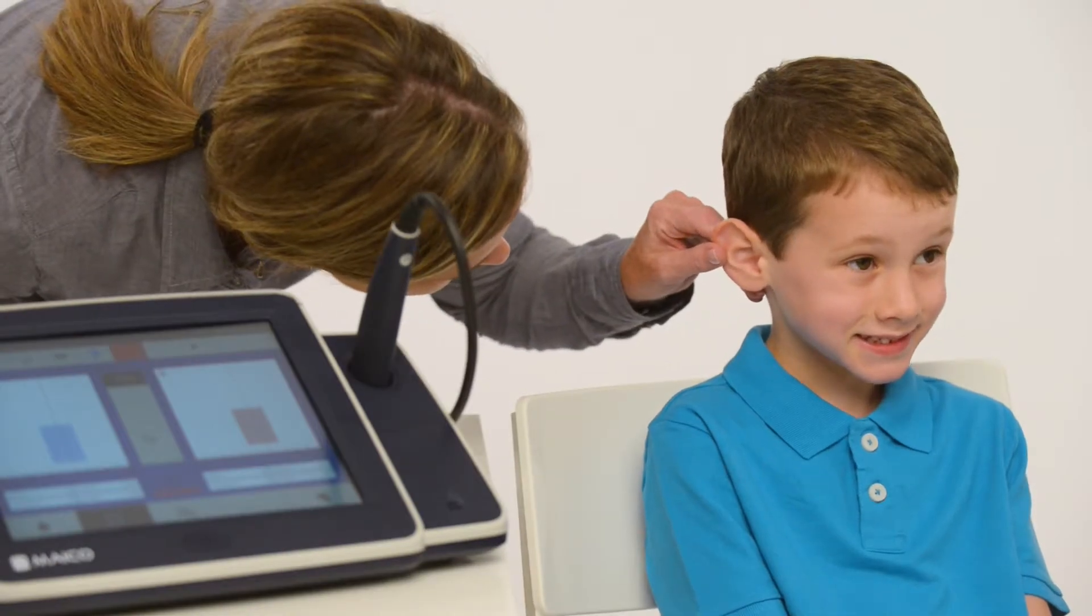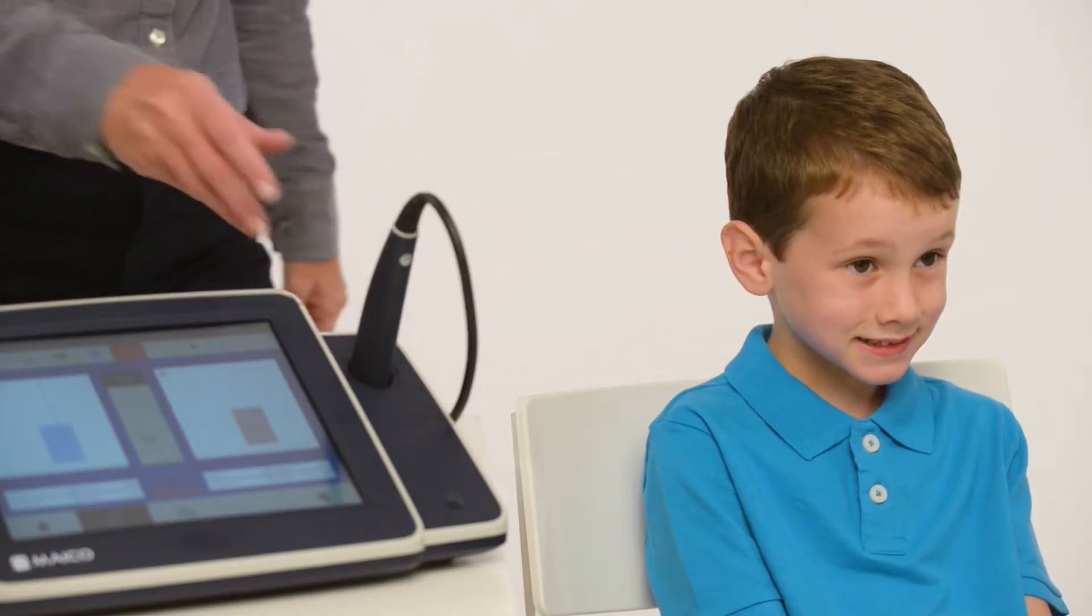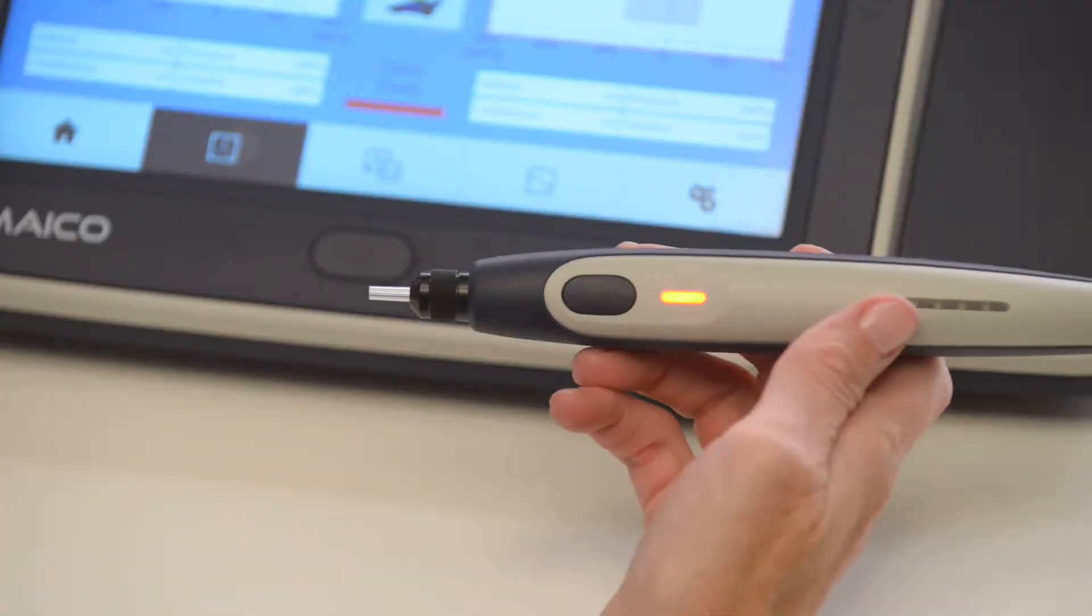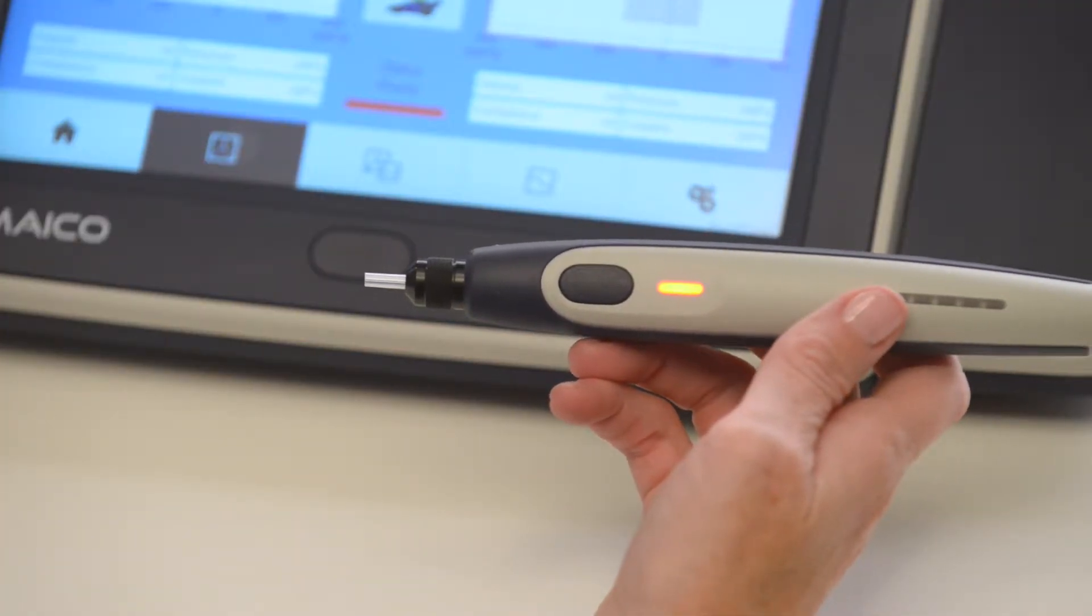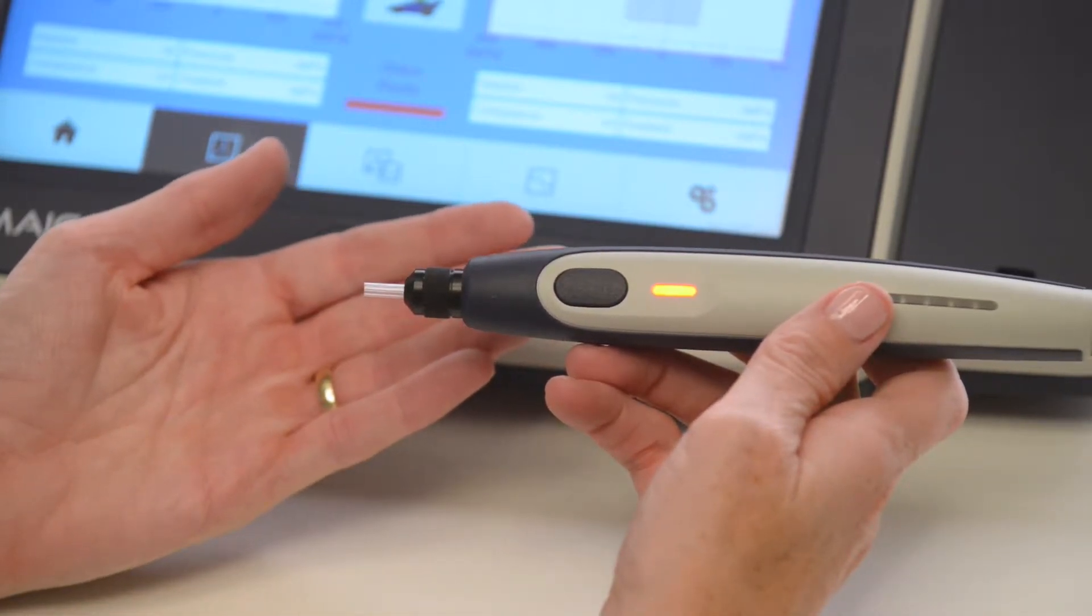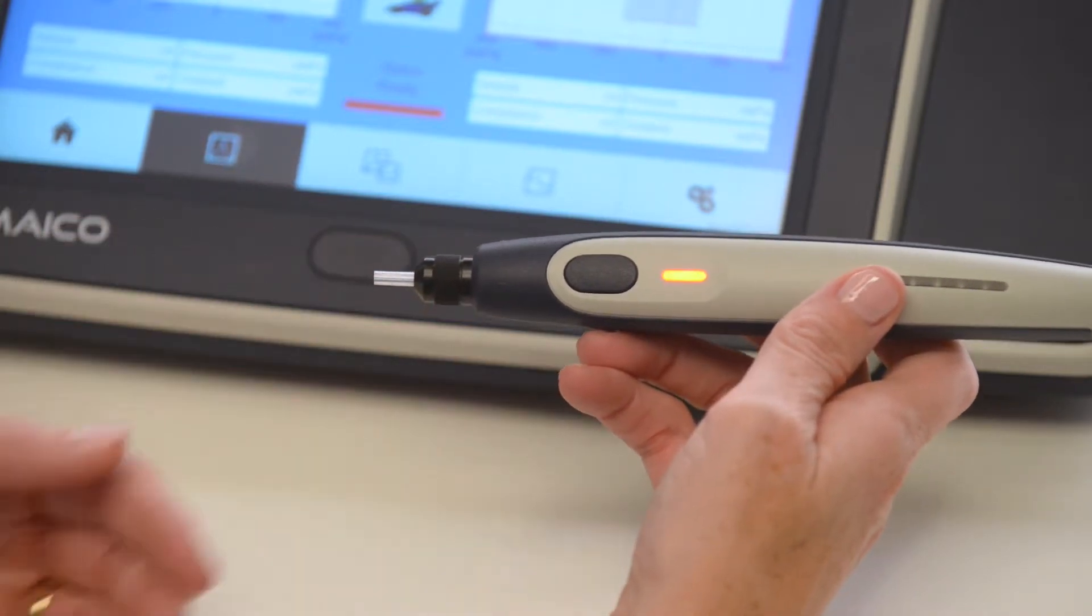When starting a tympanometry test, make a visual inspection of the ear canal to ensure there is no earwax. It is also critical to inspect the probe tip between patients to ensure it is clean and free of debris. If there is an obstruction, clean the probe tip using the tool provided. An occluded probe could result in flat tympanograms and may damage the probe.